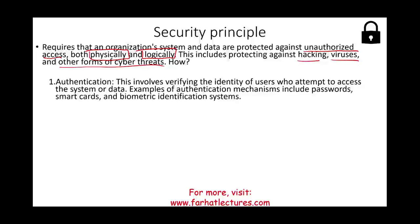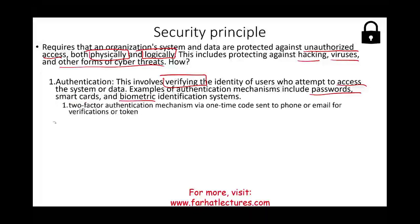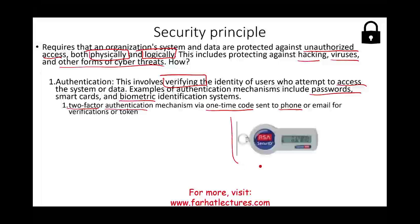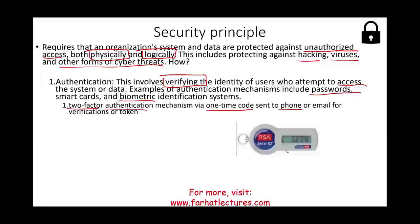How do organizations ensure they are protected? One method is authentication — verifying the identity of the person attempting to access the system or data. This includes passwords, smart cards, and biometric identification. For example, banks may require two-factor authentication via a one-time code sent to your phone or email. After you input your login and password, they send a code to your phone. You may also have physical tokens that keep changing, so you need the token plus login and password to make sure the system is protected from unauthorized access.